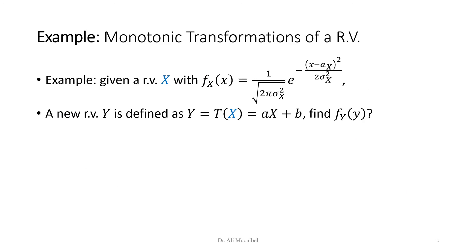Time to do an example. In this example, we are looking at a random variable x which is Gaussian. A new random variable y is defined as y = ax + b. Basically, y is a scaled version of x plus a constant b, and the question is to find the PDF of y. We have a linear transformation of a Gaussian random variable and we want to see what happens to the output.